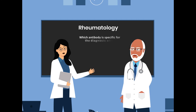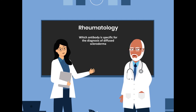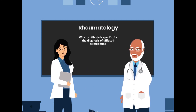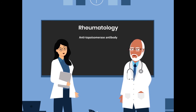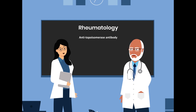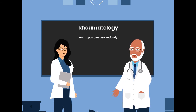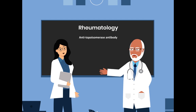Which antibody is specific for the diagnosis of diffuse scleroderma? The antibody specific for the diagnosis of diffuse scleroderma is the anti-topoisomerase antibody.